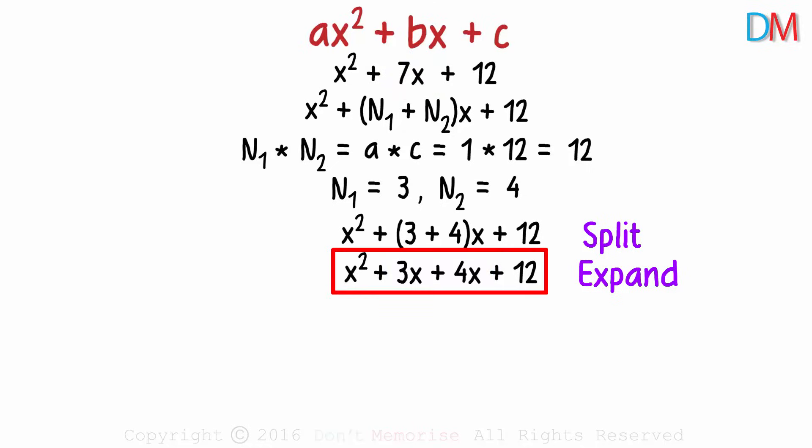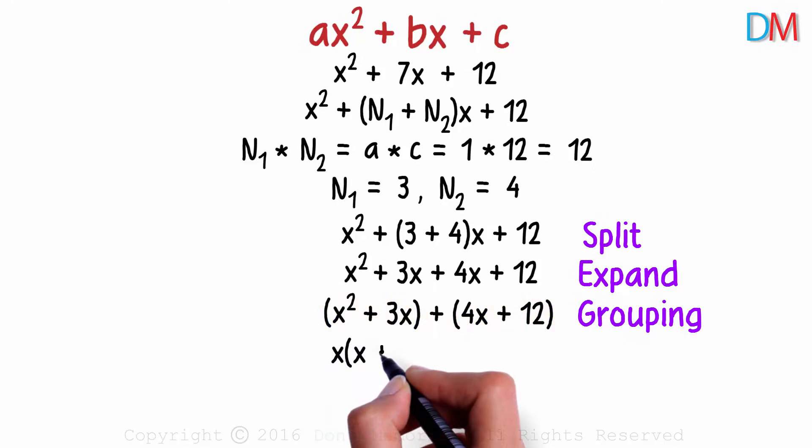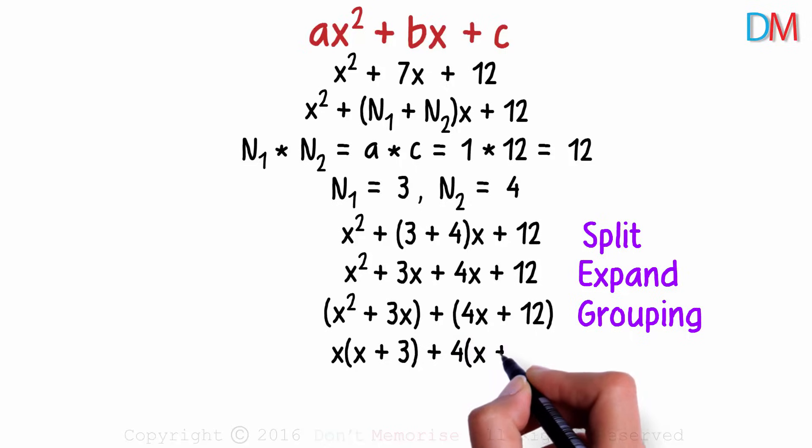And how does this help? After expansion, we group the terms like this. And how does grouping help? We look for common terms in each group. In the first group, x is common, and in the second, 4 is common. So this can be written as x times x plus 3 plus 4 times x plus 3.